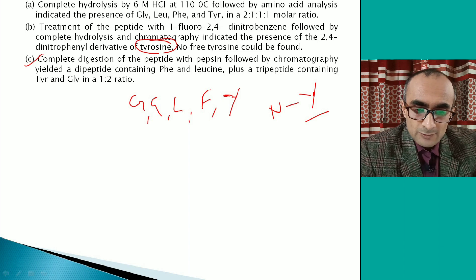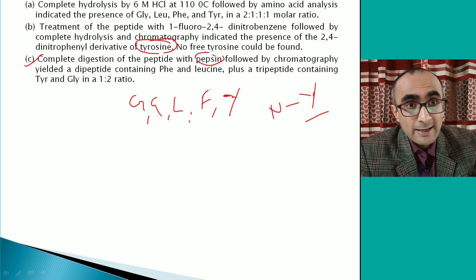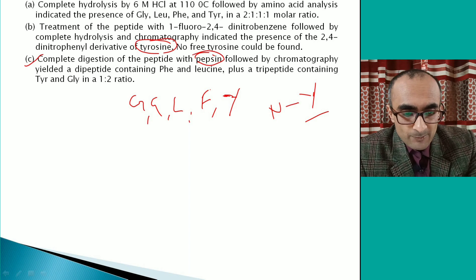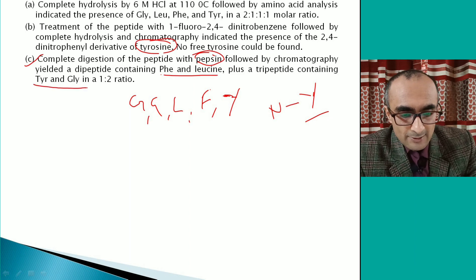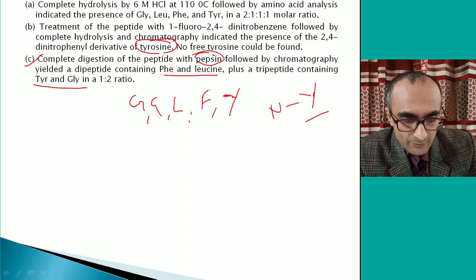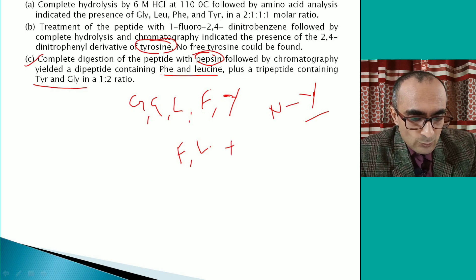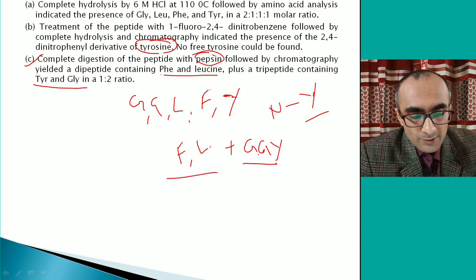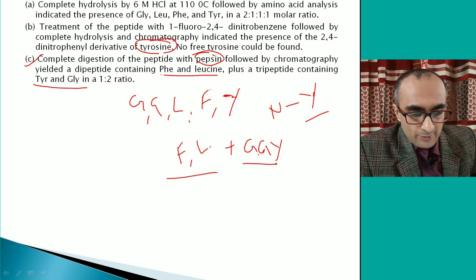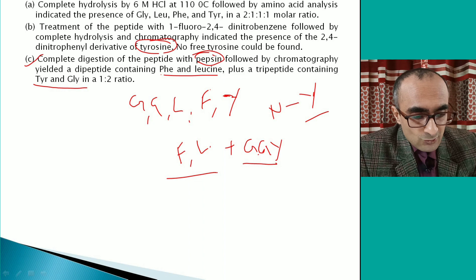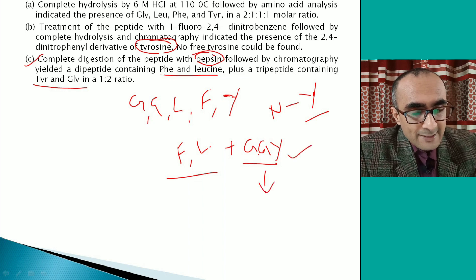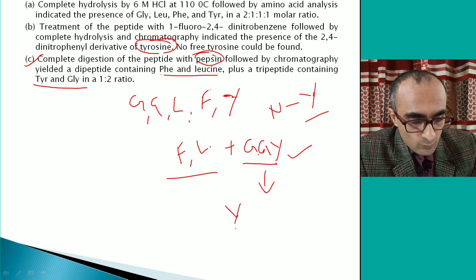When the peptide is treated with pepsin — which cleaves on the N-terminal side of aromatic amino acids — you get a dipeptide containing F and L, plus a tripeptide containing Y and two glycines. From the tripeptide, since Y is the N-terminal amino acid, the sequence of that fragment is YGG. The dipeptide must be ordered as FL or LF.